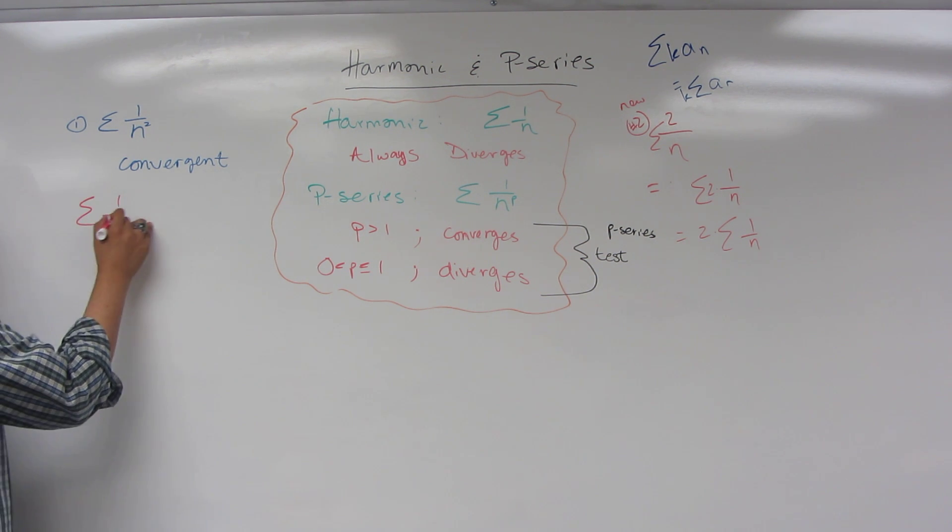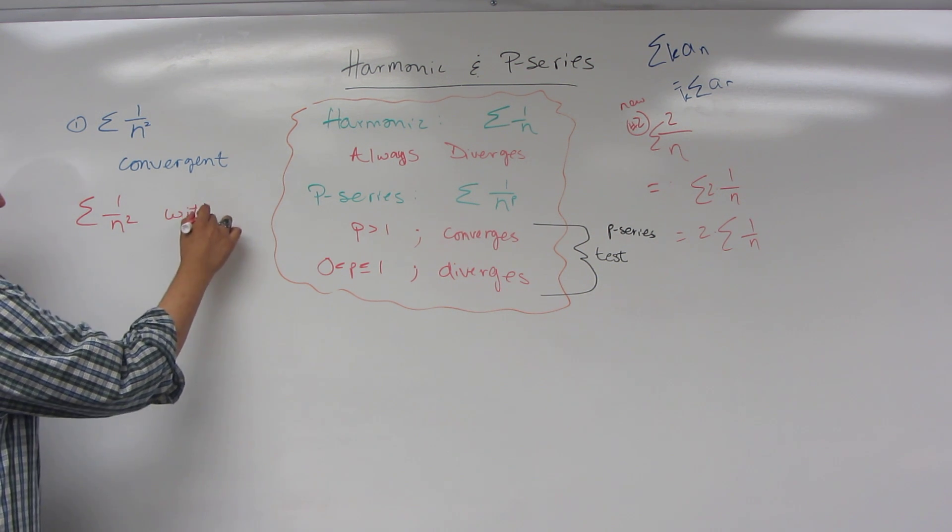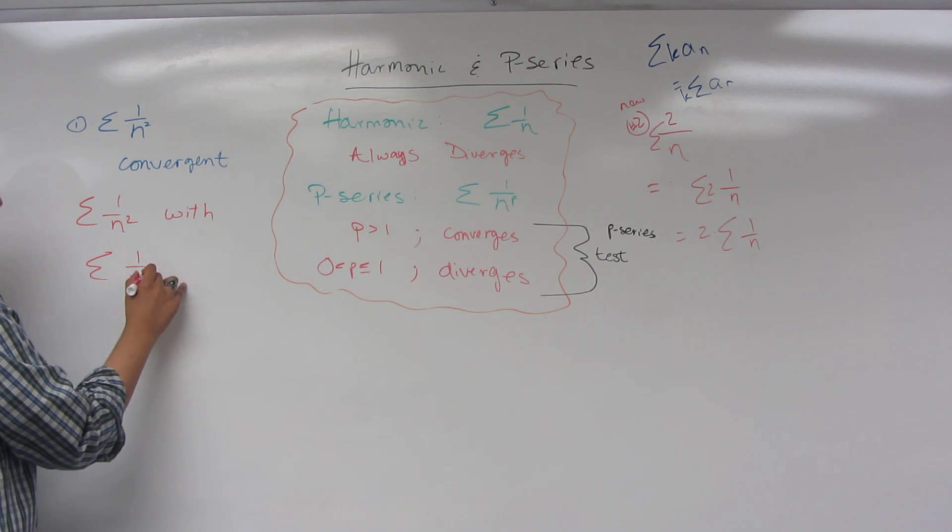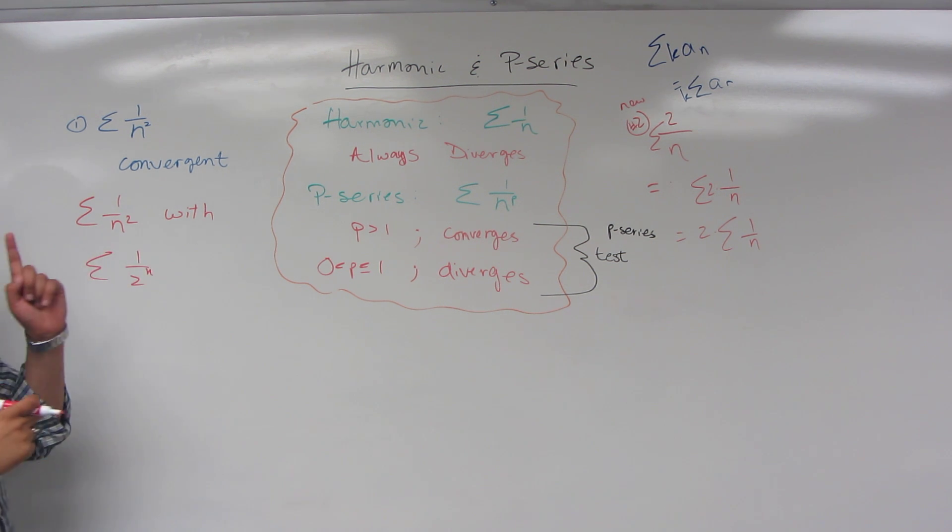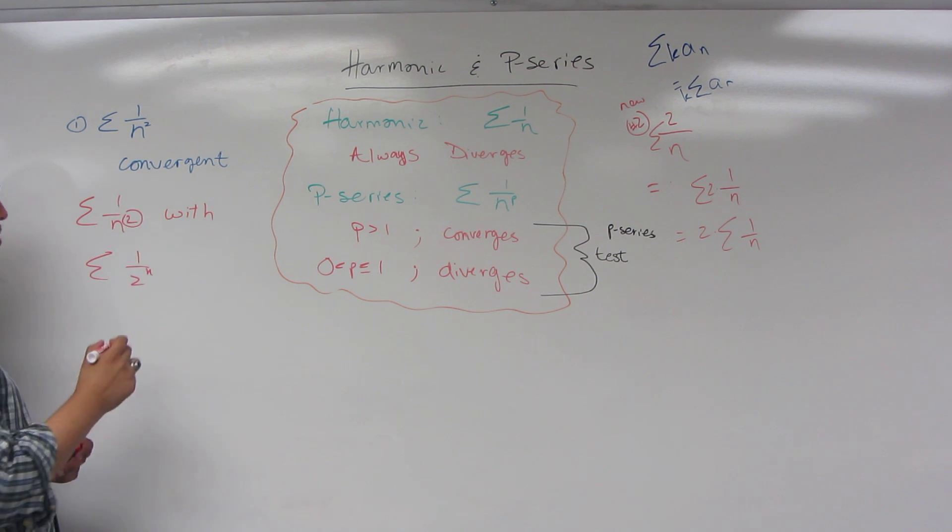Sigma one over n squared, a lot of students get this confused with sigma one half, or excuse me, sigma one over two to the n. Now, one over two to the n is a geometric series. One over n squared is a p series. So key difference,